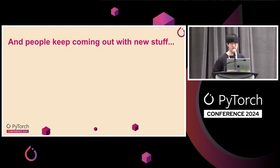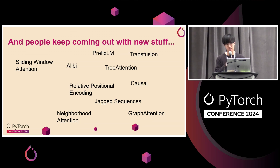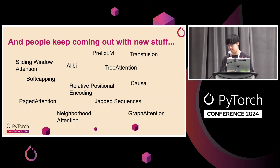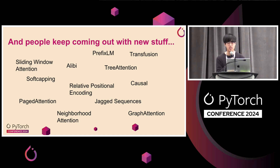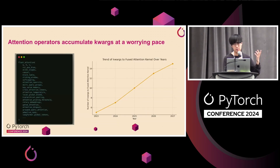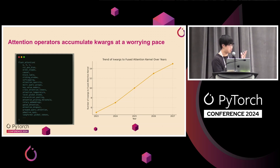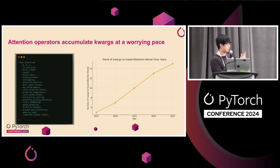Unfortunately, people keep on coming out with new stuff — sliding window attention, alibi, prefix, causal, soft capping, page attention. Researchers just keep on coming out with new attention variants. This poses a big problem for library providers like PyTorch, because every time you add a new variant, the people who write attention operators need to add new quirks. ChatGPT projections suggest we might have 15 to 20 quirks by 2027 just to support all new attention variants in one API.